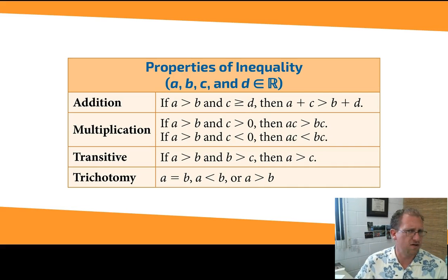Trichotomy. This is a little bit strange. It's new to you. There are three possible ways that two numbers can relate. They can be the same number. 6 is 6. Or A can be less than B. 6 is less than 12. Or A can be greater than B. 12 is greater than 6. So, if you have two numbers, they relate to each other one of three ways. They can be the same, or one can be greater, or the other one can be greater. Kind of common sense.